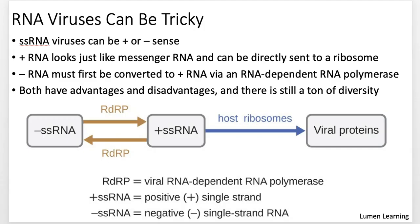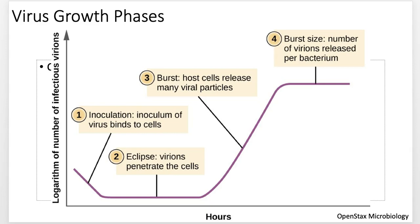Viral growth phases: viruses follow a typical organism growth phase. You have initial inoculation, then it takes some time for the virus to take over, then you have that burst as viruses start releasing progeny, and then eventually there's a drop-off as cells start dying and the number of virions released decreases. Bacteria follow similar growth phases — there's a lag phase, log phase, equilibrium, and then a death phase.